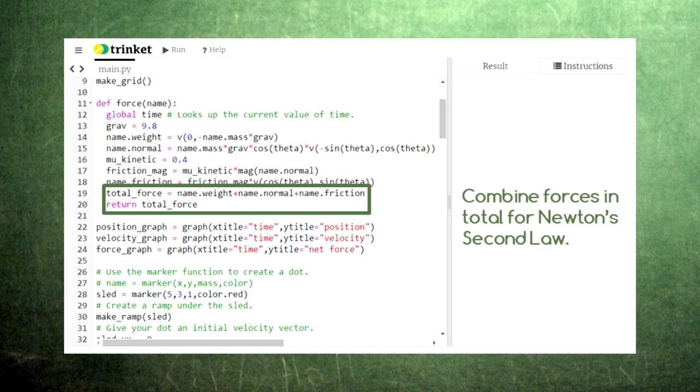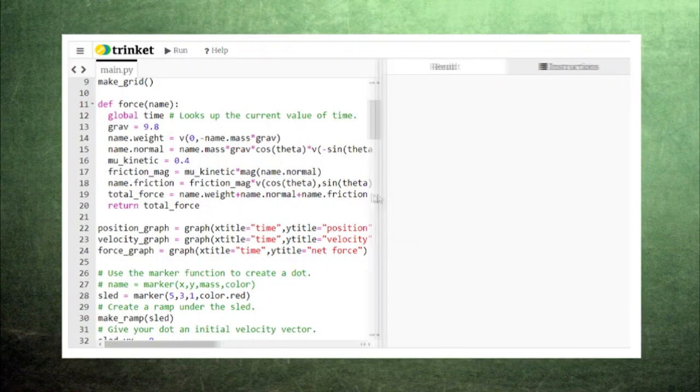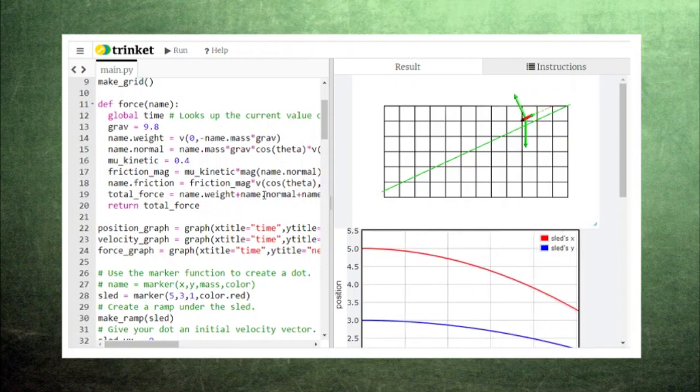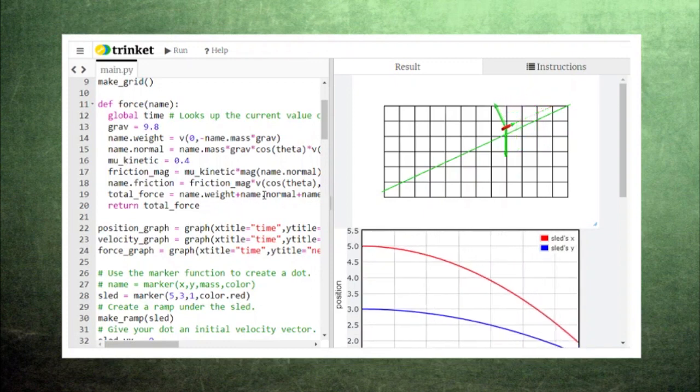Now notice nothing in this force assumes that there's a surface beneath the sled, except for our delicately calculated normal force. When we run the code, these three forces conspire to move our sled exactly along the surface of the hillside.